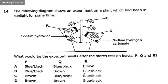Question 14 is as follows. The following diagram shows an experiment on a plant which had been in sunlight for some time. So that is the plant. And we have got sodium hydroxide and sodium hydrocarbonate. What would be the expected results after the starch test on leaves P, Q, and R?